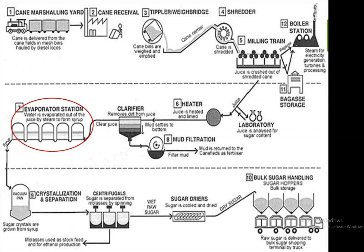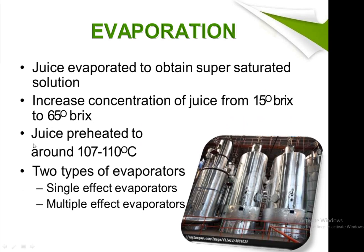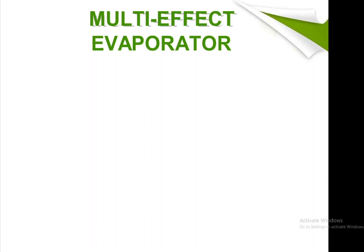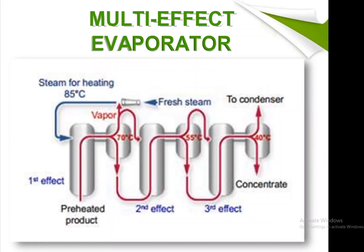After filtration, the next step is evaporation, held at the evaporator station. In this process, juice is evaporated to obtain a supersaturated solution, increasing the concentration from 15 degrees Brix to 65 degrees Brix. Juice is preheated to around 107 to 110 degrees Celsius. Two types of evaporators are used: single-effect and multiple-effect evaporators. In the multi-effect evaporator, feed enters the first effect with steam at 85 degrees Celsius, preheated at 70 degrees Celsius.